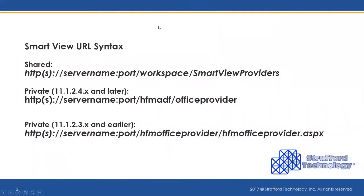When using SmartView there are two types of connections: shared and private. Each of these connection types has a unique syntax as you can see here. The first URL is for a shared connection — it requires a server name and a port. The second URL is for a private connection; it also requires a server name and a port but the syntax is slightly different.